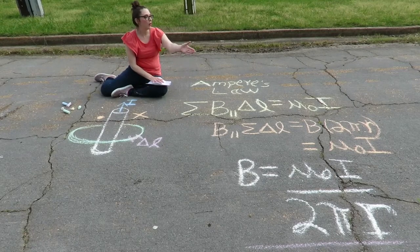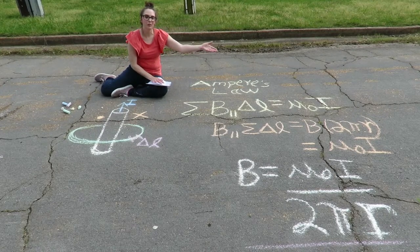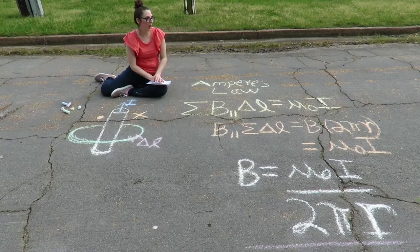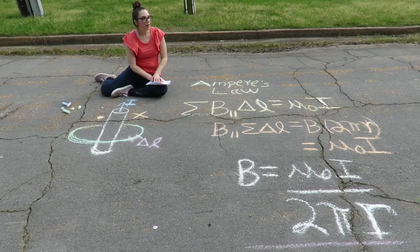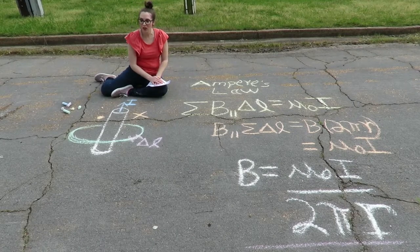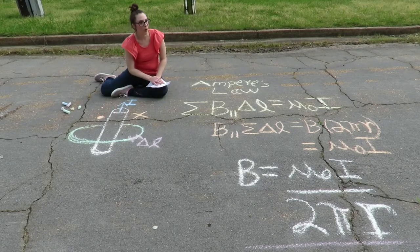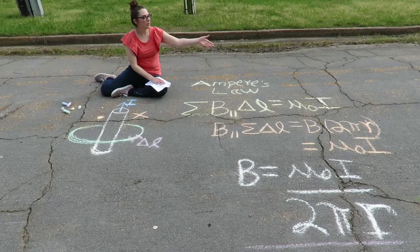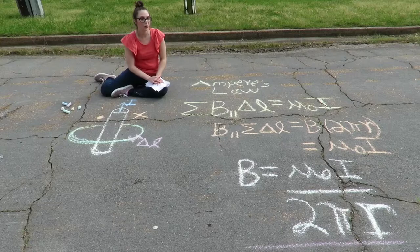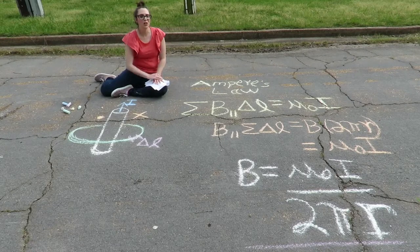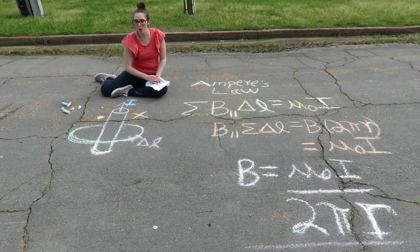Setting those equal to each other, B times 2πr equals μ₀ times I. Solving for the magnetic field, B equals μ₀I divided by 2πr, where r is the distance from the center of the wire.